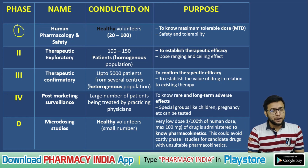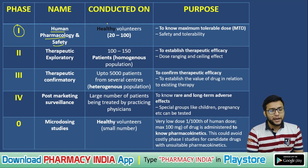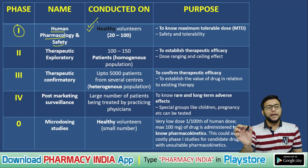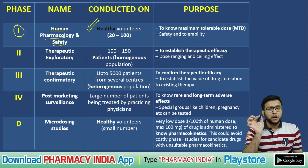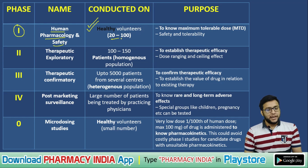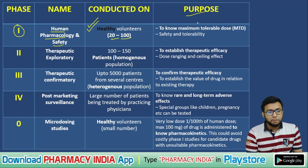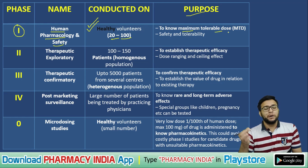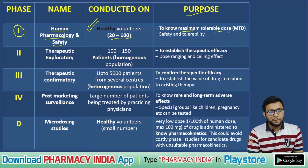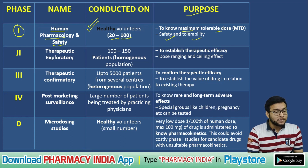Phase 1 is called Human Pharmacology and Safety phase. A common exam question asks how many humans are involved — Phase 1 is conducted on 20 to 200 healthy volunteers. The purpose of Phase 1 is to know the maximum tolerable dose, assess safety, and determine tolerability.